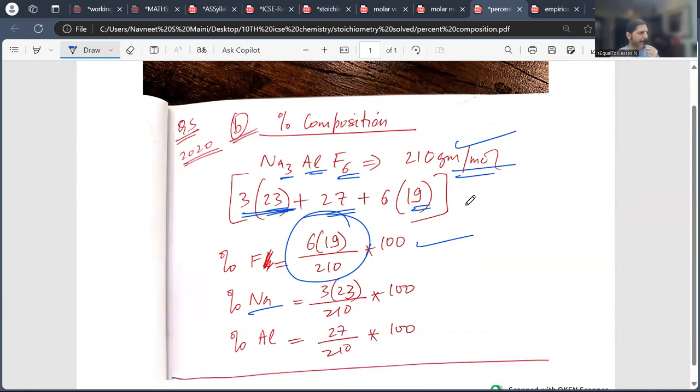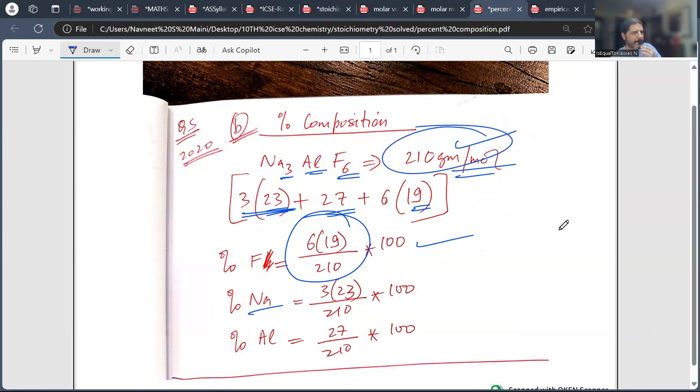First, you remove the molar mass of compound. The molar mass is 210. After that, you can see how much sodium is part of it. How much sodium is part of it? 3 into 23 upon molar mass of that molecule. You will calculate this. The percentage of the total percentage should be 100%.